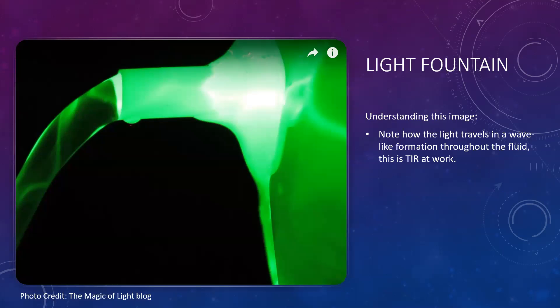To understand this image, you have to note that the light travels in a wave-like formation throughout the fluid — this is total internal reflection at work. As you can see by my cursor, the light comes through here, bouncing at the barrier between the medium of air and the water, then bouncing back and forward.